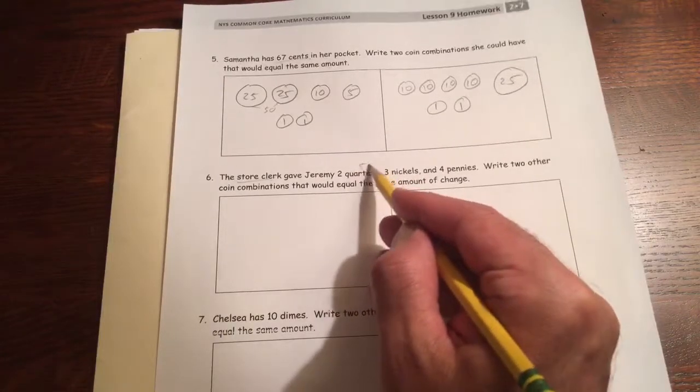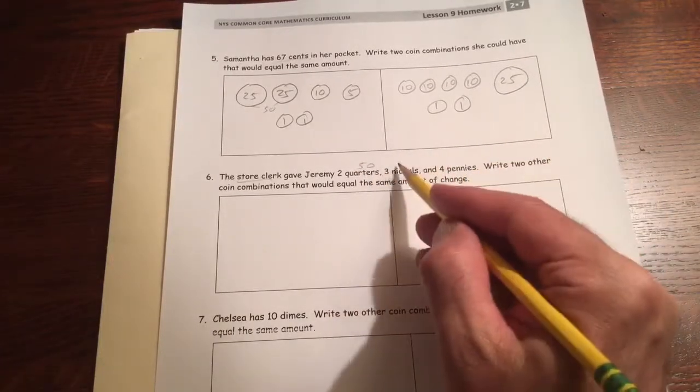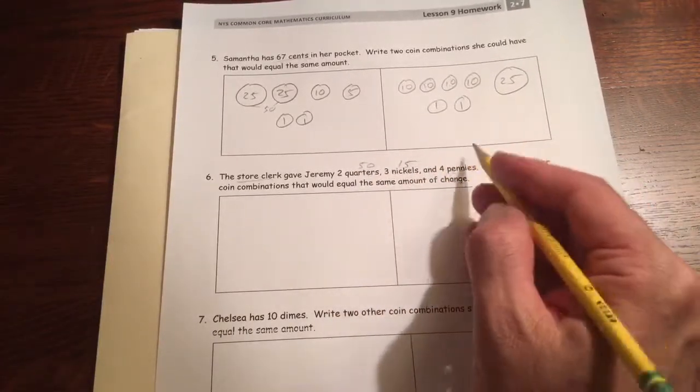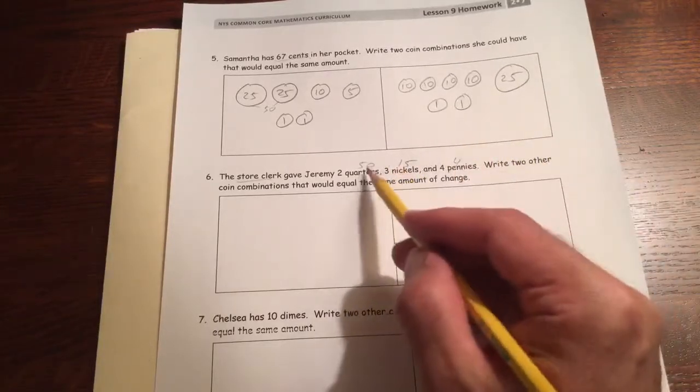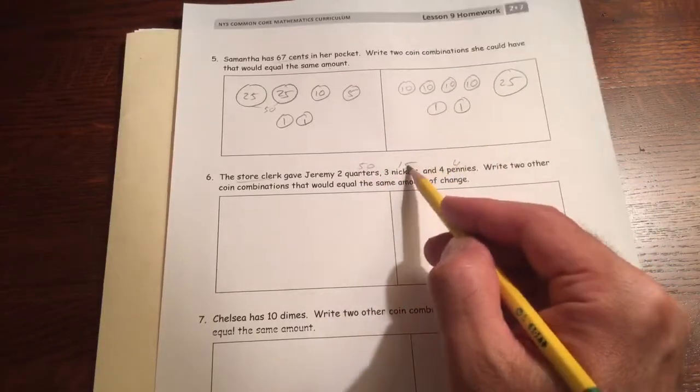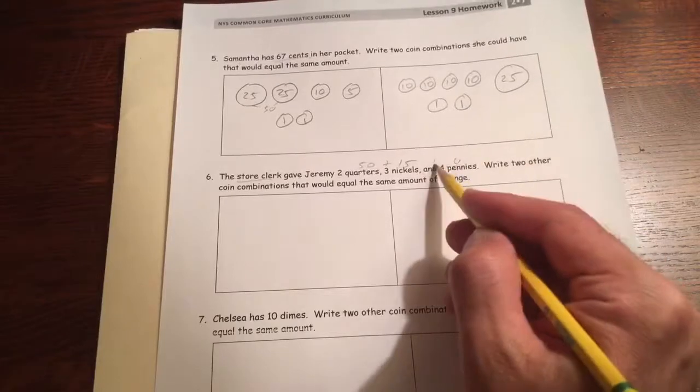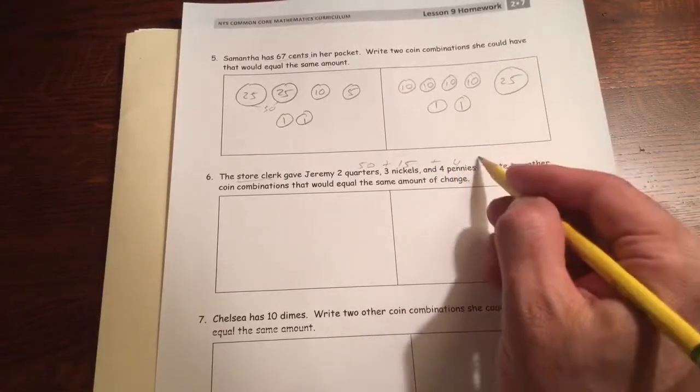Two quarters, that's going to be 50 cents. Three nickels, that's 15. And the four pennies, of course, that's four. So that's 50 and 15. That's 65 plus four. That's going to be 69 cents.